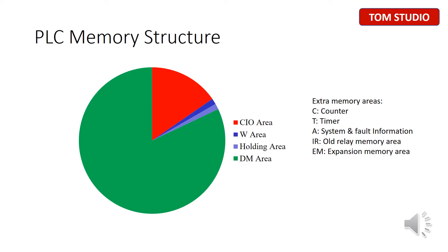CIO stands for Core Memory Area for Inputs and Outputs. W Area is for Internal Bits and Words Application, with no data retained. H is the Holding Area. R is for Internal Bits and Words Application but with Data Retentive. D is the DM Area, used for Data Storage for Words Only — except CJ2 PLC, which can only be used for word application, not able to be used as bit.